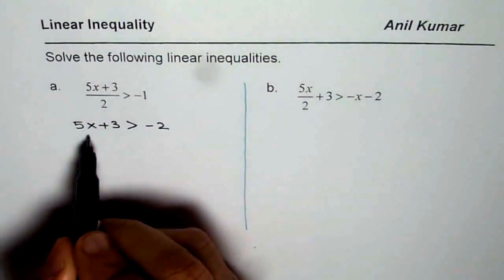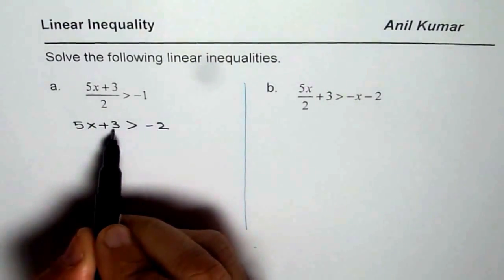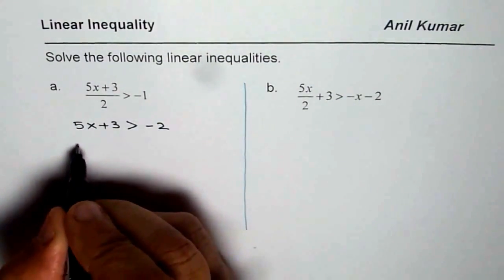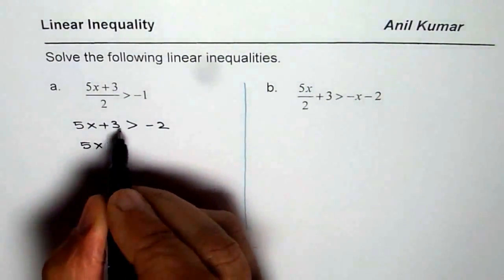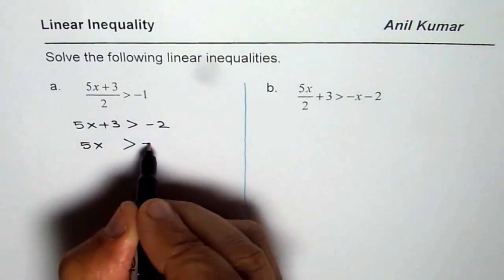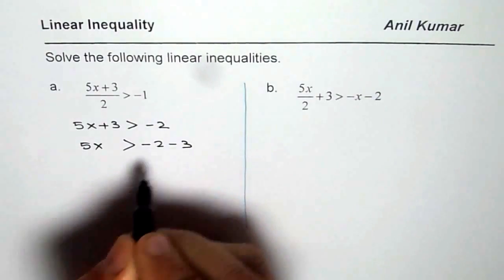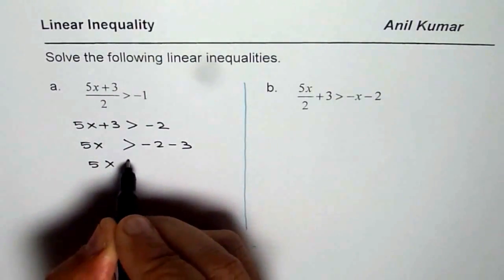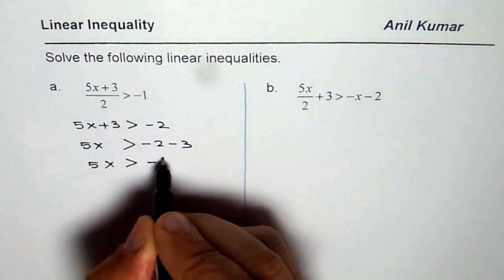Now since we need to find what x is, let's take the constant to the right side. That means now we will take away 3 from both sides. So if you take away 3 from this side, you are left with 0. On this side we get minus 2 minus 3.